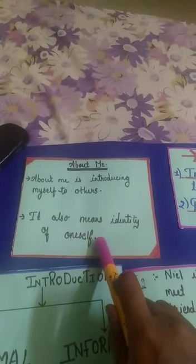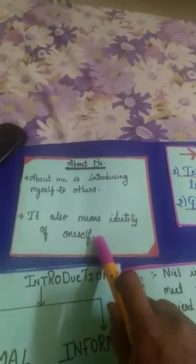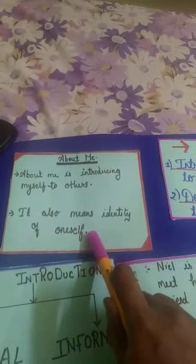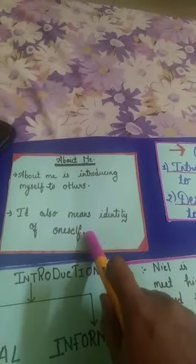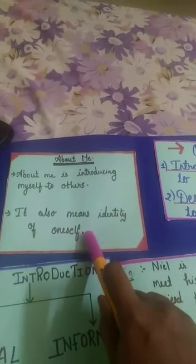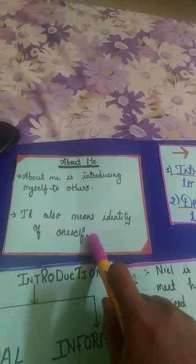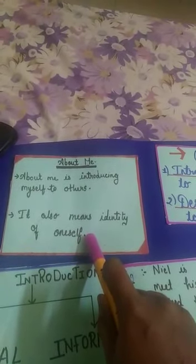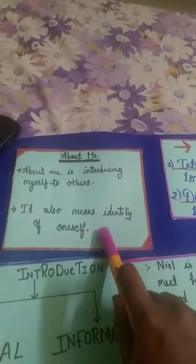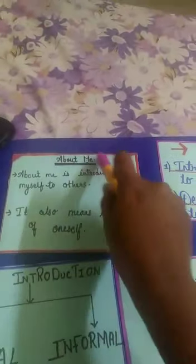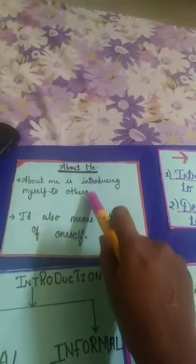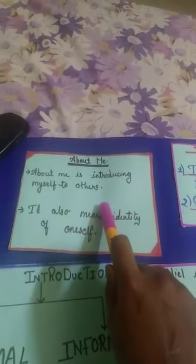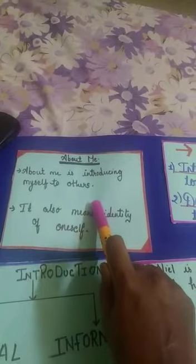Do you have an ID card with you? You are having school ID cards with you. That is an identity card of yours which includes your photo, your phone number, your name, your address, and your school's name. So, about me means to explain who you are, what you do, and what others need to know about you.